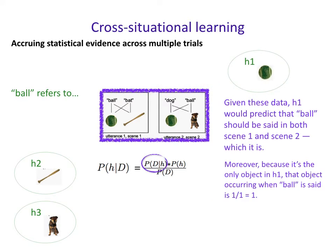For hypothesis one — referring to the green object — given these two scenes worth of data, H1 would predict that 'ball' should be said in both of them because the green object is present in both. And this is true, so that's probability one versus zero. Moreover, because this is the only object in H1 that the word 'ball' could refer to, the probability of that object occurring when 'ball' is said is one out of one. So we end up with a likelihood for hypothesis one of one: it's compatible with the data, times one out of one, for a total probability of one.